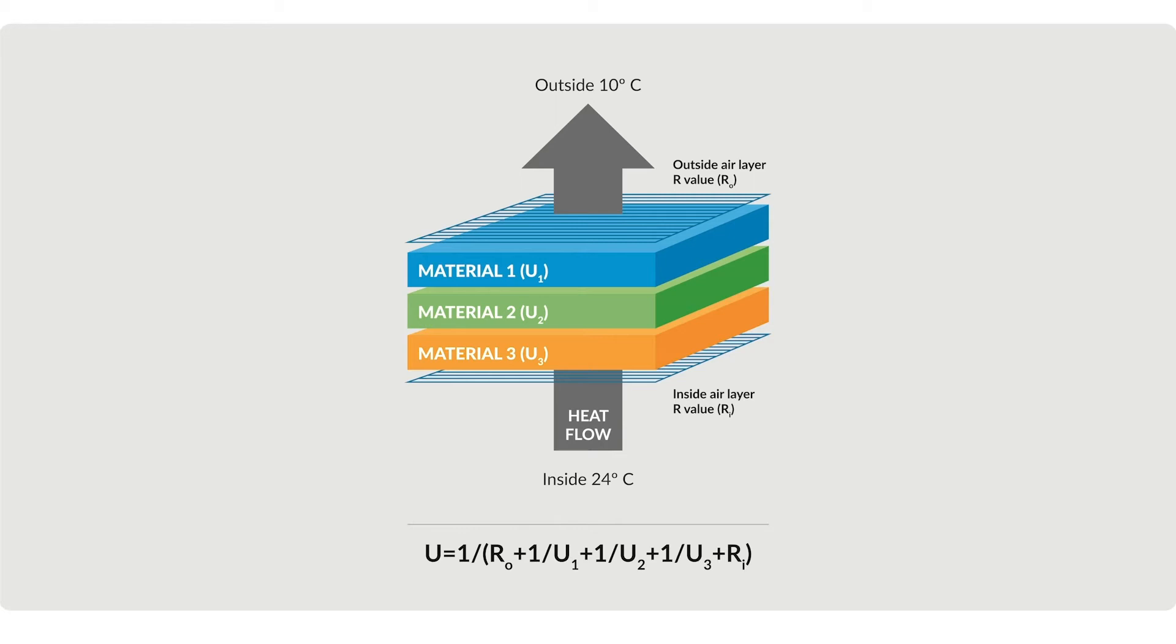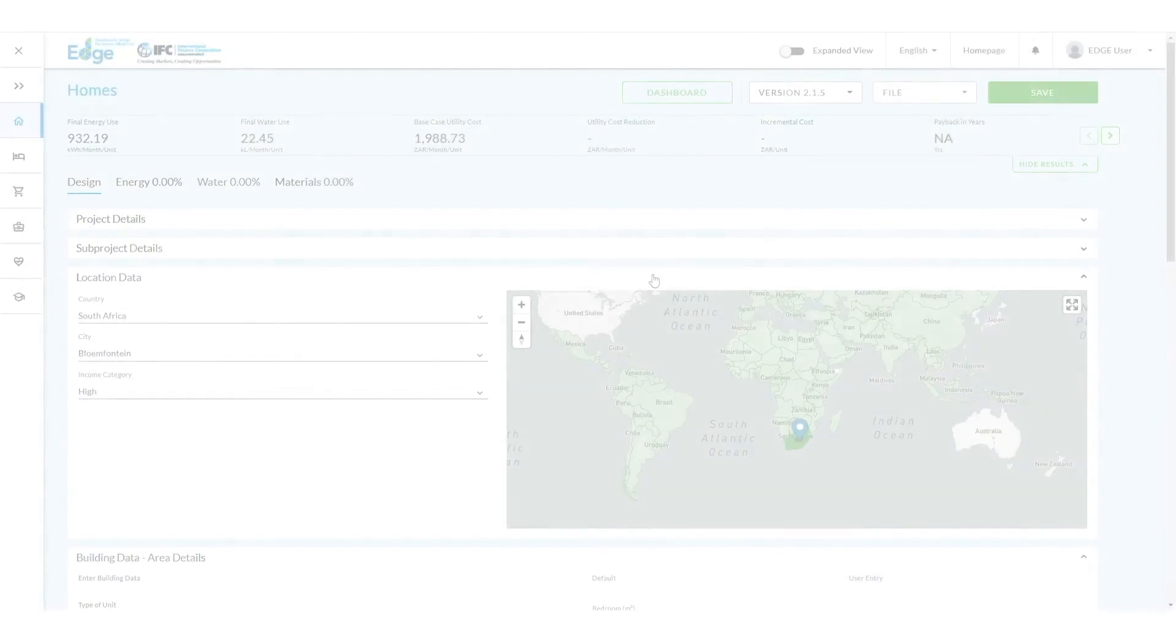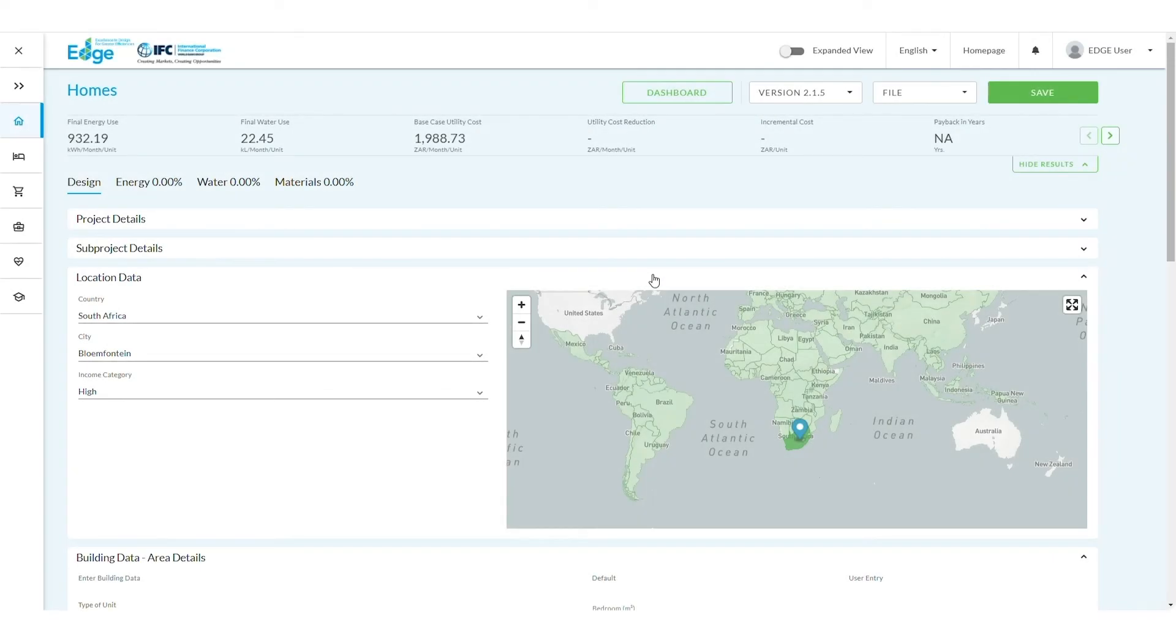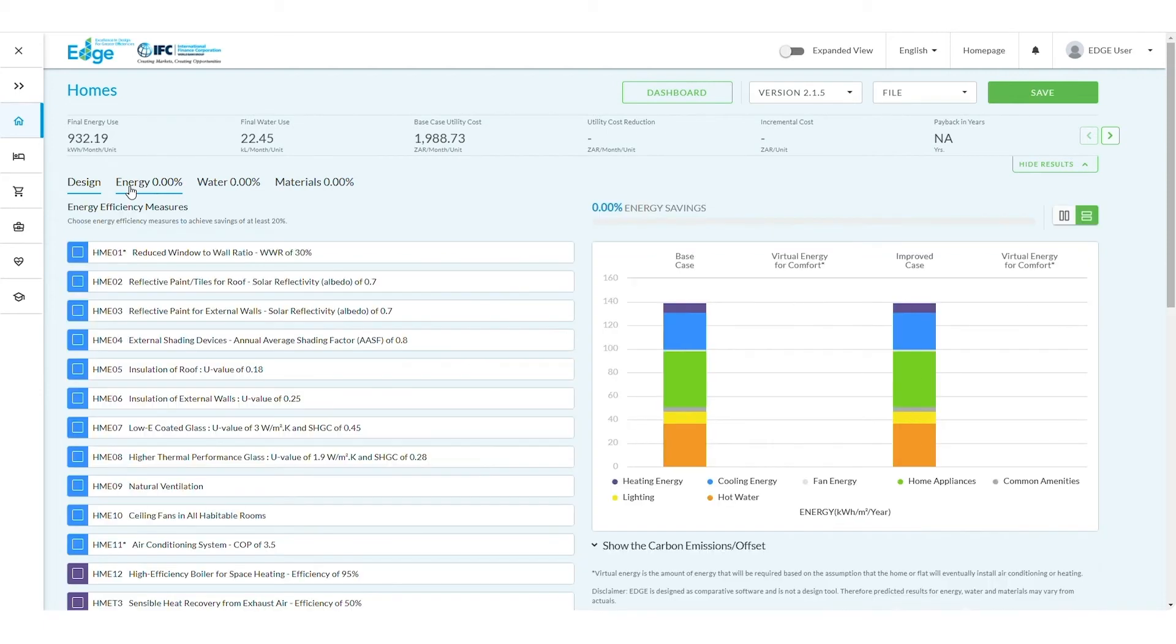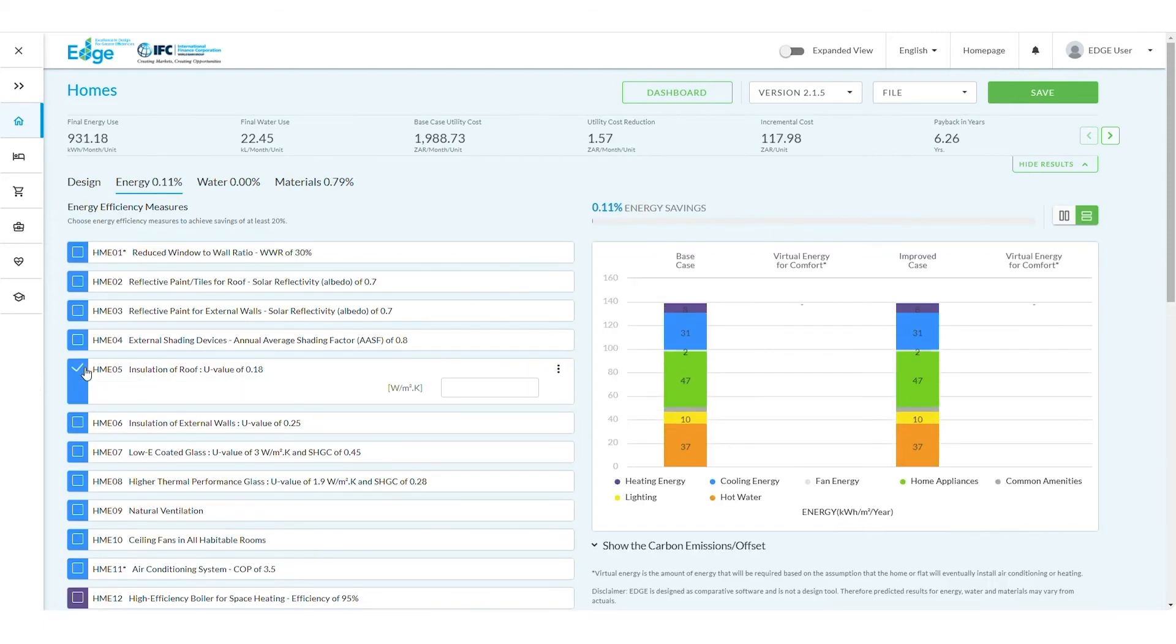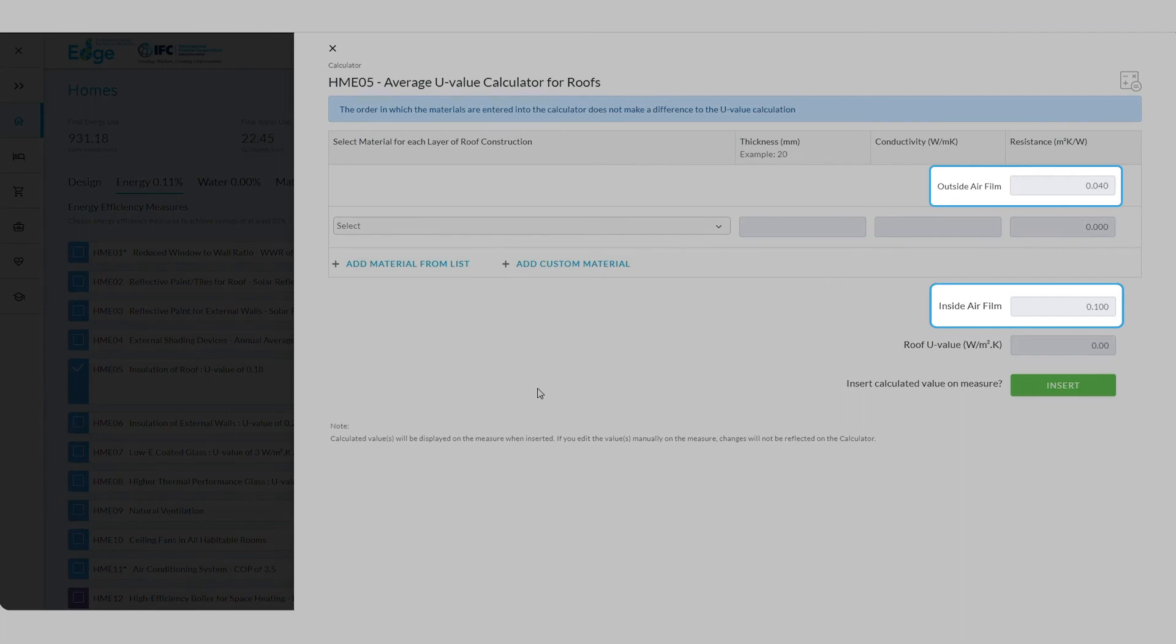Remember to include the effect of surface air films in your calculation. This calculation can also be performed in the Edge app under the Energy tab. Once you're there, tick the measure, click on the three dots and select the calculator. Here you'll see that the air films are already included.